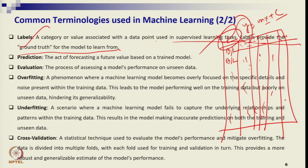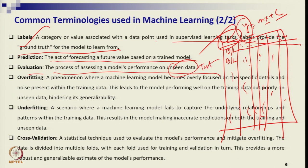Prediction is the outcome — the forecasting value from your trained model. Evaluation is the performance measurement of your model based on unseen test data, not training data. The model is developed from the training data or training plus validation data, and evaluated using the test data.